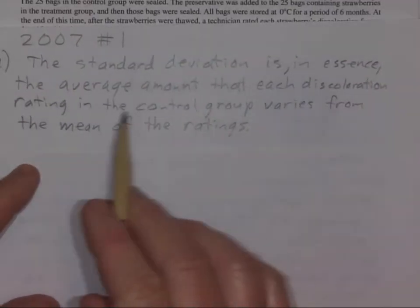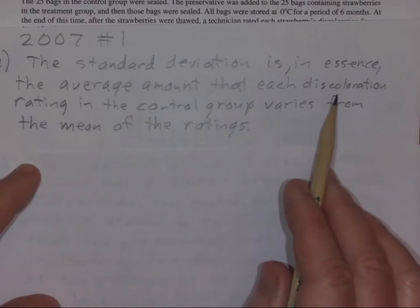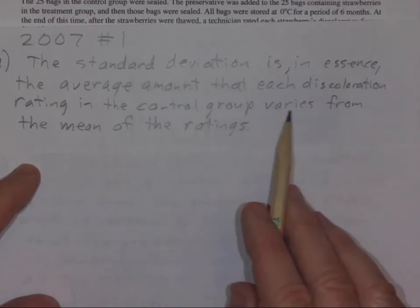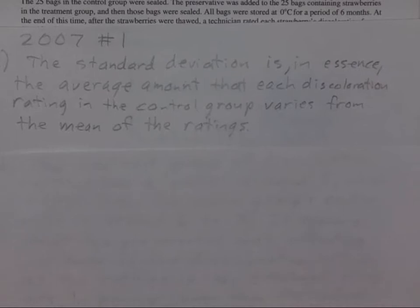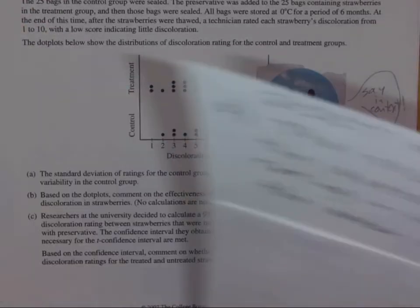So the standard deviation is, in essence, the average amount that each discoloration rating in the control group varies from the mean of the ratings. That's it. That's the main thing you have to know about standard deviation. The formula for it has never been on the exam since 1997 when the exam started. It sure as heck isn't going to be in it this year because of the nature of the exam this year. So that's all you had to say there.